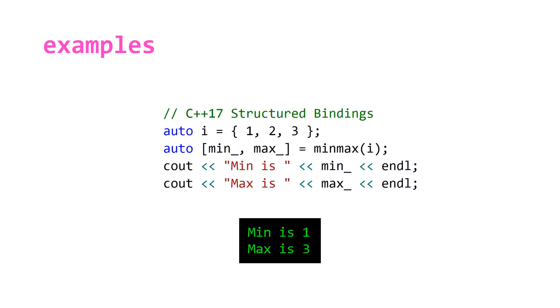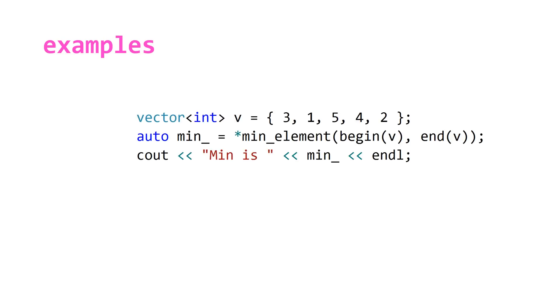And for our last three algorithms, we have min_element. Here we have a vector of integers that have just the values 1 to 5 sort of randomized. We can use type inference with min underscore equal to asterisk min_element, the begin iterator and the past last element iterator, and this will output min is 1.